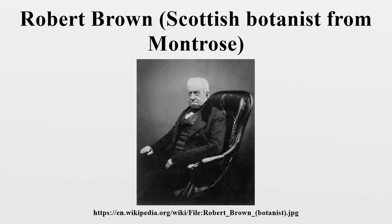In early 1809 he read his paper called 'On the Natural Order of Plants called Proteaceae' to the Linnean Society of London. This was subsequently published in March 1810 as 'On the Proteaceae of Jussieu.' It is significant for its contribution to the systematics of Proteaceae and to the floristics of Australia, and also for its application of palynology to systematics. This work was extensively plagiarised by Richard Anthony Salisbury, who had memorised much of the Linnean reading and then inserted it in Joseph Knight's 1809 publication on the cultivation of the plants belonging to the Natural Order of Proteae. In 1810, he published the results of his collecting in his famous Prodromus Florae Novae Hollandiae et Insulae Van Diemen, the first systematic account of the Australian flora.